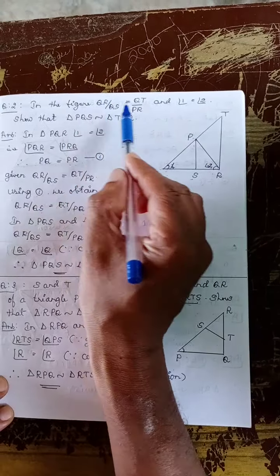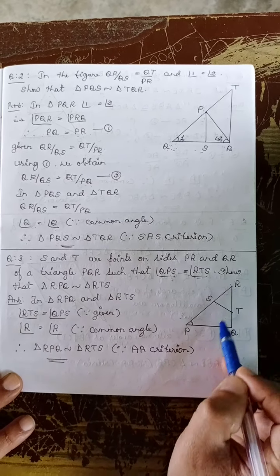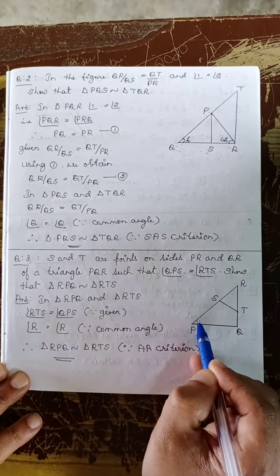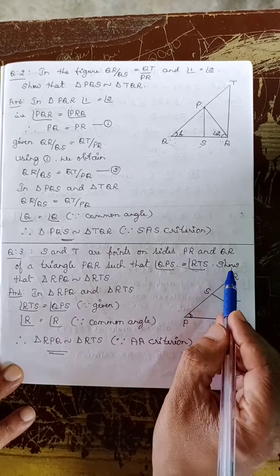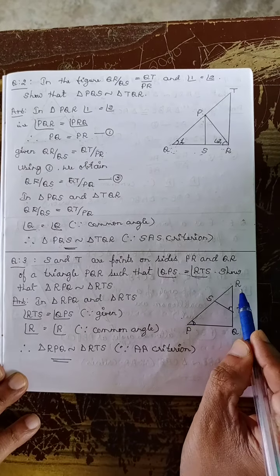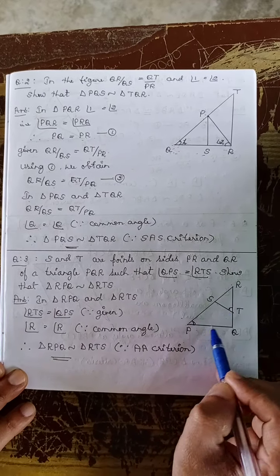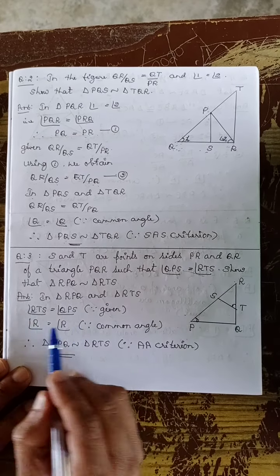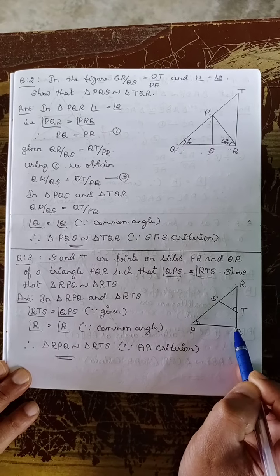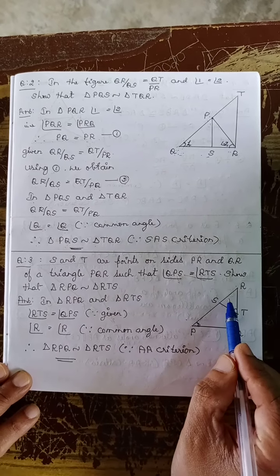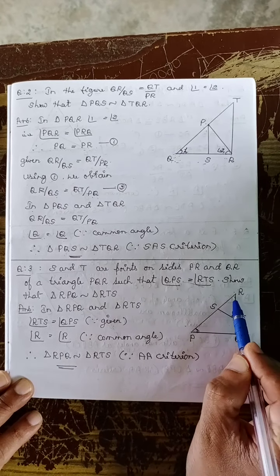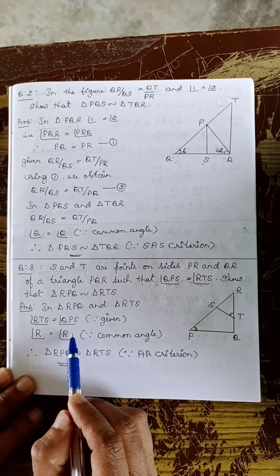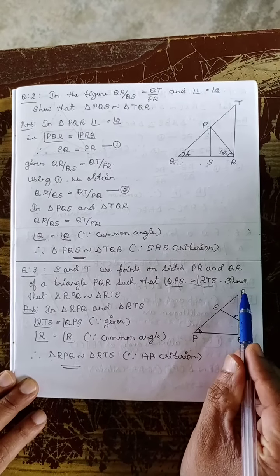Question number 3: S and T are points on sides PQ and PR of triangle PQR such that angle QPS equals angle RTS. Show that triangle RPQ is similar to triangle RTS. Answer: In triangles RPQ and RTS, angle RTS equals angle RPQ since it is given. Also, angle R is a common angle for both triangles. Therefore, by the AA similarity criterion, triangle RPQ is similar to triangle RTS.